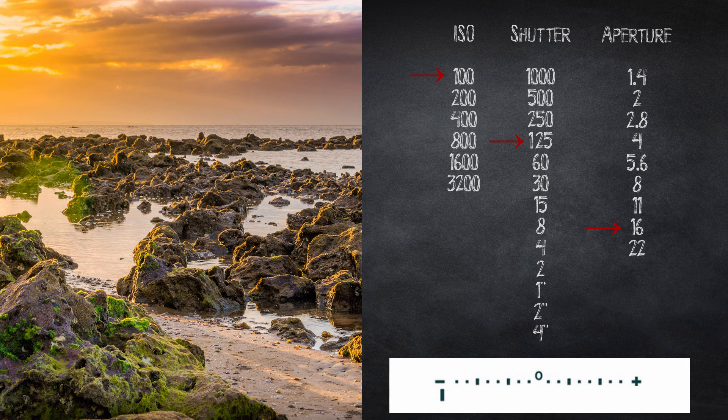Since we have our tripod and blurry water doesn't bother us, the easy fix is to slow down the shutter by seven stops. So following our chart we can see that a shutter speed of one second will get us the seven stops that we were missing, resulting in a perfect landscape shot.